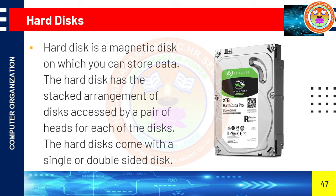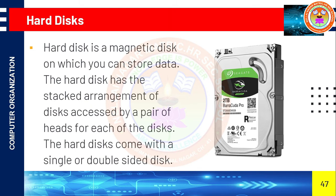The hard disk comes with a single or double-sided disk. This is the hard disk image — it is inserted inside the CPU, located inside the CPU. Using this disk, we can store data inside the computer. The famous hard disk company like Seagate has a storage of 2TB — two terabytes. That is 1024 plus 1024, totally 2048 GB of storage space.